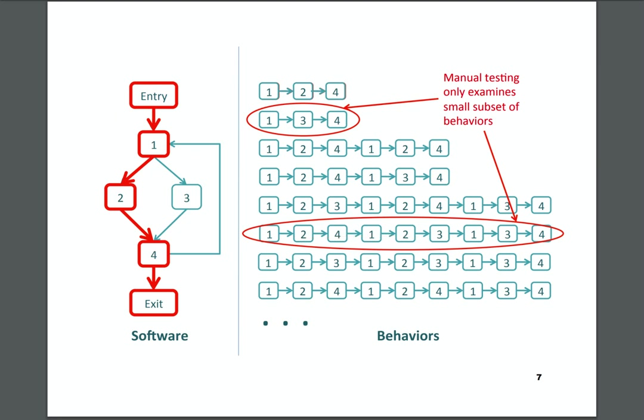How many traces through the program do we have for a given program? It could be infinite. You could have a windowing manager with an infinite loop on purpose — an event-driven system with an event loop just waiting. An application that eventually turns itself off is kind of useless. So there could be a potentially infinite number of these traces.